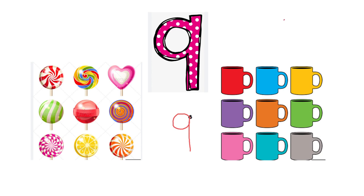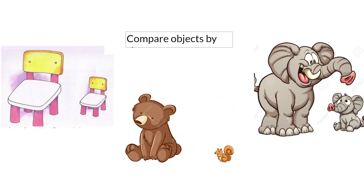You can get a piece of paper and write number 9 with Miss Tala. Here we have the dot — you go round, close the circle, and a straight line down. Well done! And now we are going to move to the new concept, which is comparing objects by size.